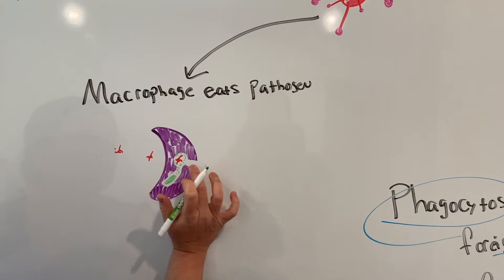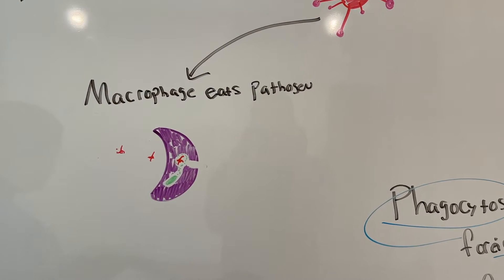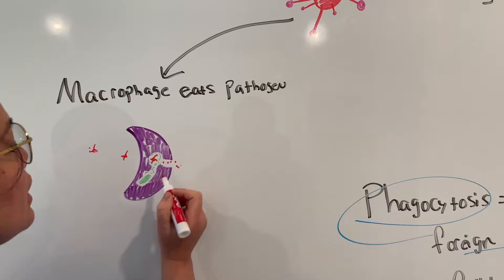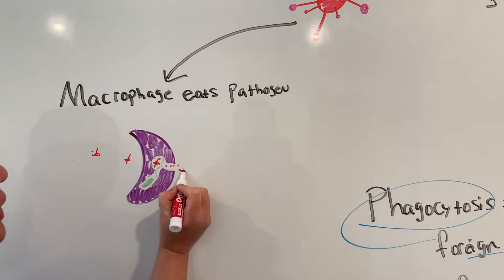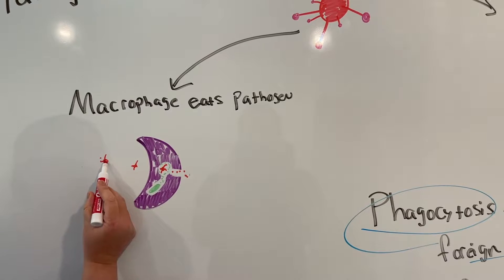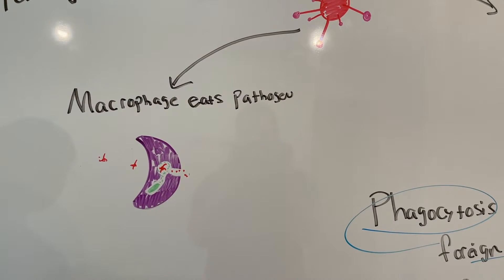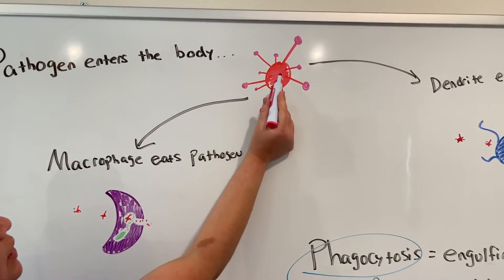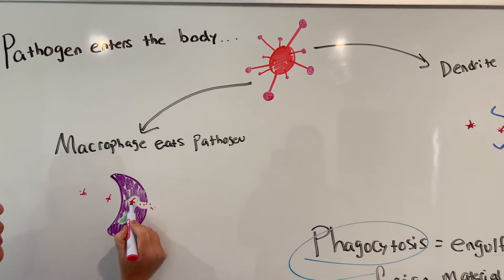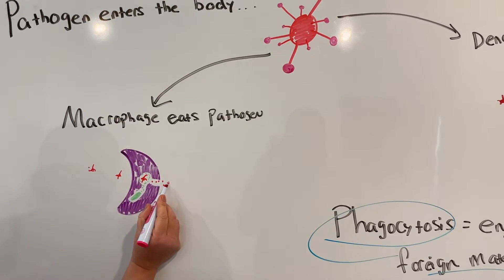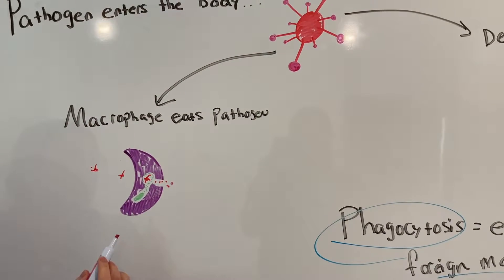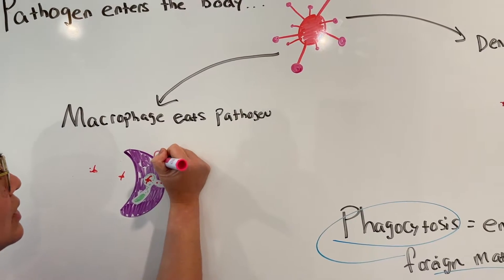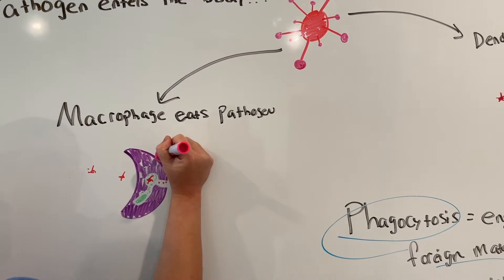When the macrophage breaks down the pathogen, some particles or pieces of that pathogen are going to be released. Some of these broken-down components are actually the antigen of this pathogen. Remember, the antigen is right here on the pathogen. So some of the broken-down components are the antigen. Now what the macrophage is going to do is display this antigen on the surface of itself.